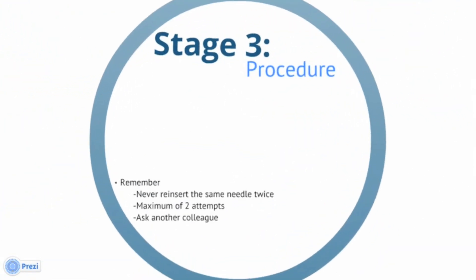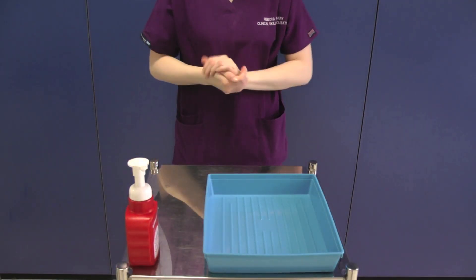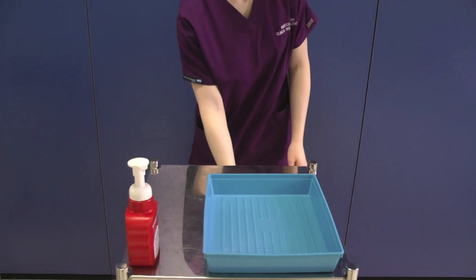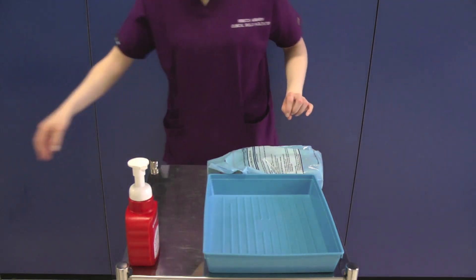Stage 3 is performing the procedure itself. This video will demonstrate how to gather the equipment seen in stage 2 and correctly take blood cultures using the collection set. For the purposes of this video we will start with a clean trolley and tray. Our videos on venipuncture and cannulation demonstrate this cleaning process. Once your trolley and tray are cleaned, decontaminate your hands using the WHO 7 stage hand washing technique — this must be used every time you decontaminate your hands. Gather the equipment onto the trolley making sure there is a sharps bin to hand. Do not put the unopened equipment in the tray at this point.